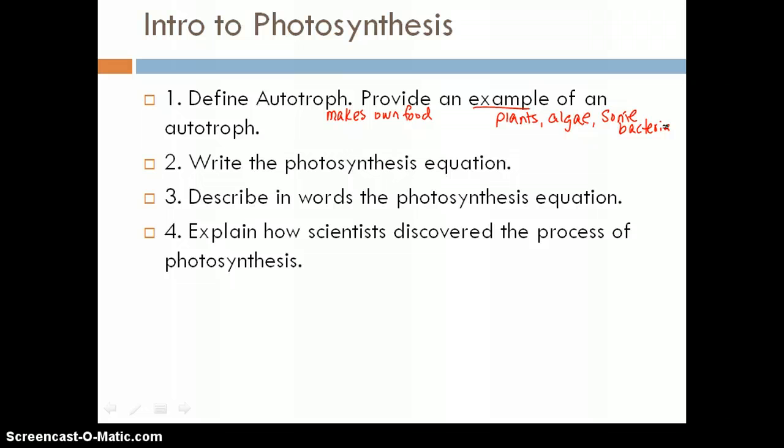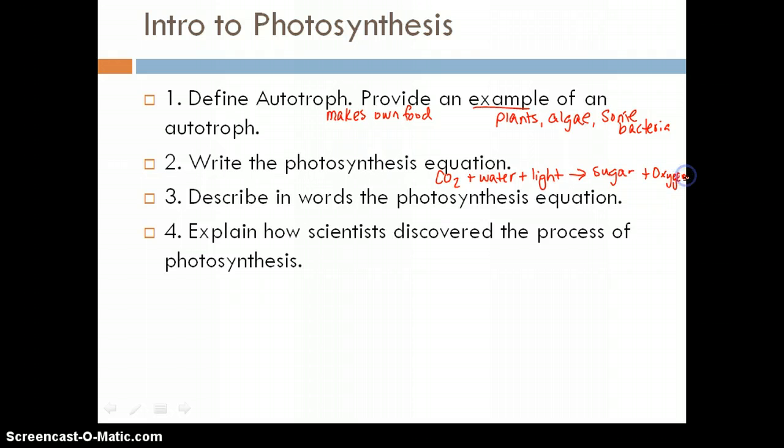So the photosynthesis equation is carbon dioxide plus water plus light, and that produces sugar or organic molecules plus oxygen. You do need to know the equation and understand it. So a lot of you during worksheets and things, I noticed instead of carbon dioxide, you wrote carbon plus water plus light, and that's not correct. Make sure that you know that it is carbon dioxide. It's what we breathe out. And then plants give out sugar or organic compounds, and then they breathe out oxygen.